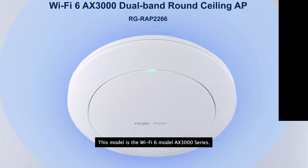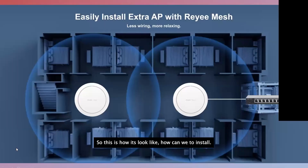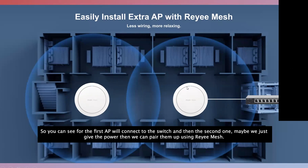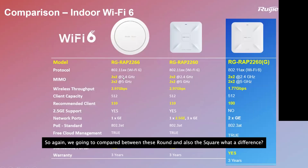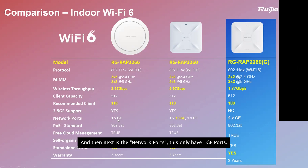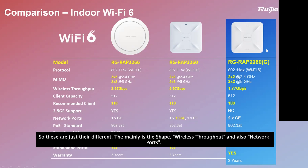We also have a round-shaped AP — a Wi-Fi 6 AX3000 model. It can be installed by connecting to a switch, and a second unit can be powered and paired using Reyee Mesh without pulling additional cables. Comparing the round and square models: the round AP has a maximum throughput of AX3000 (approximately 2.97 Gbps) and one gigabit port, while the square 2260E has a 2.5G port and higher throughput.